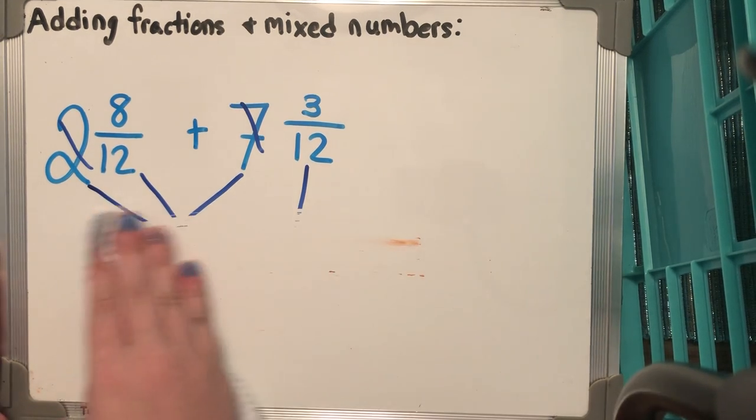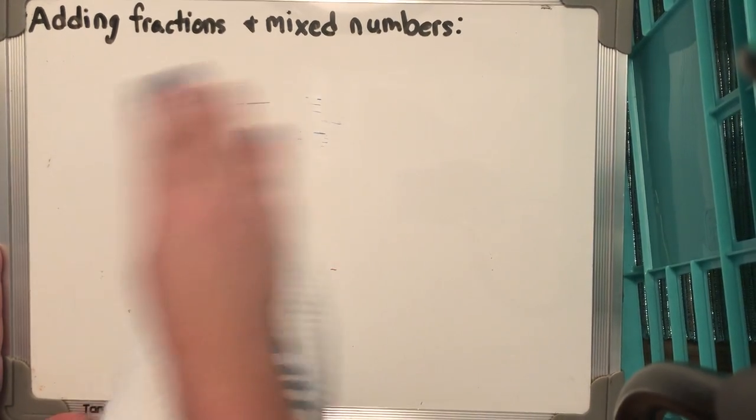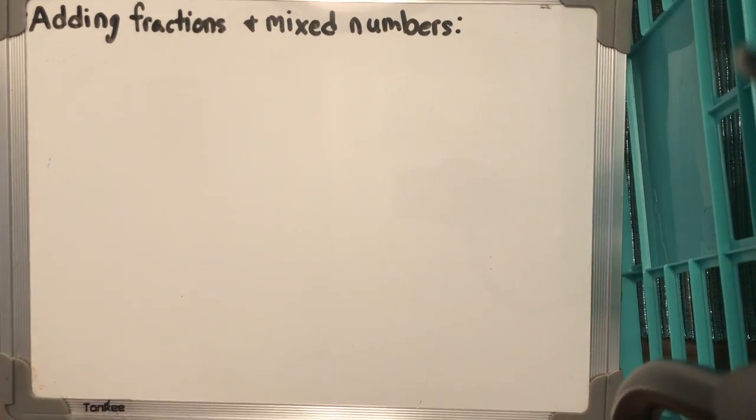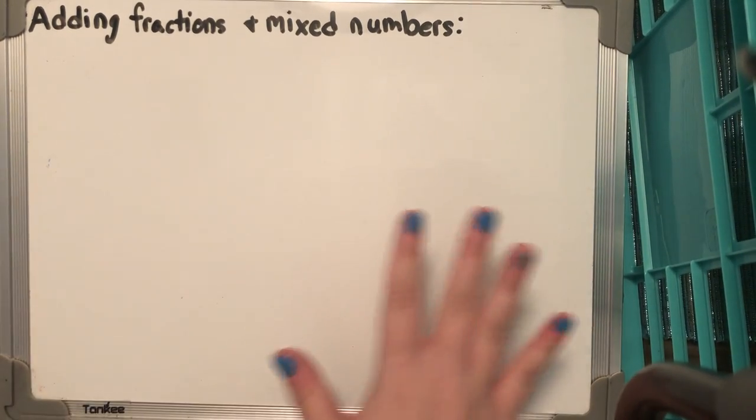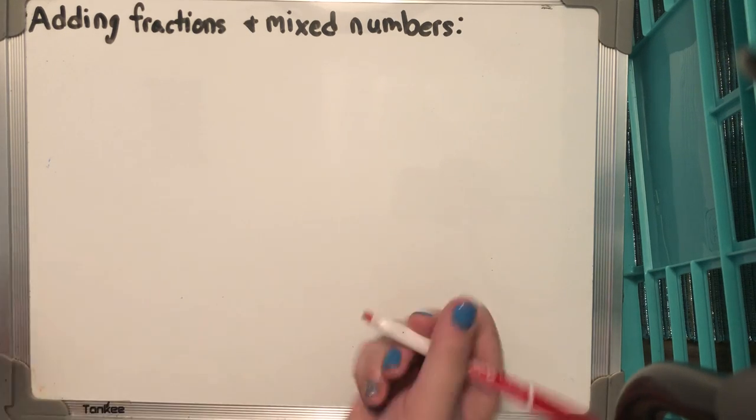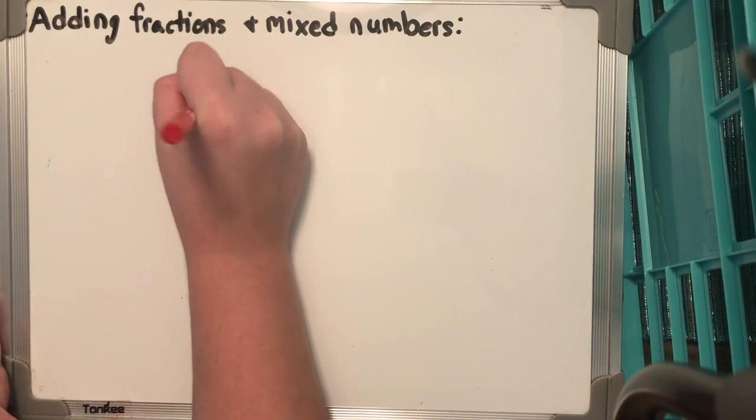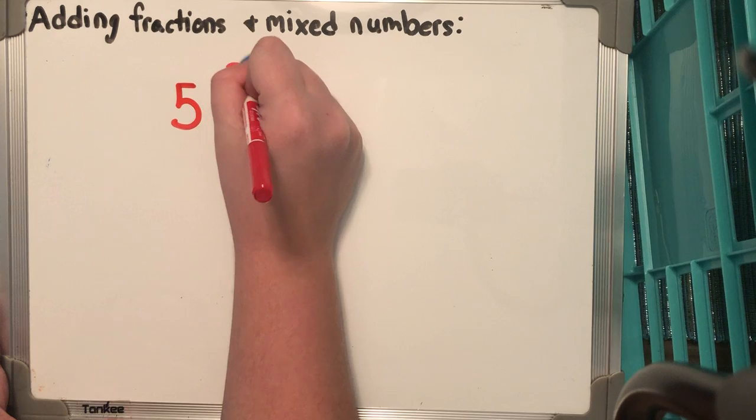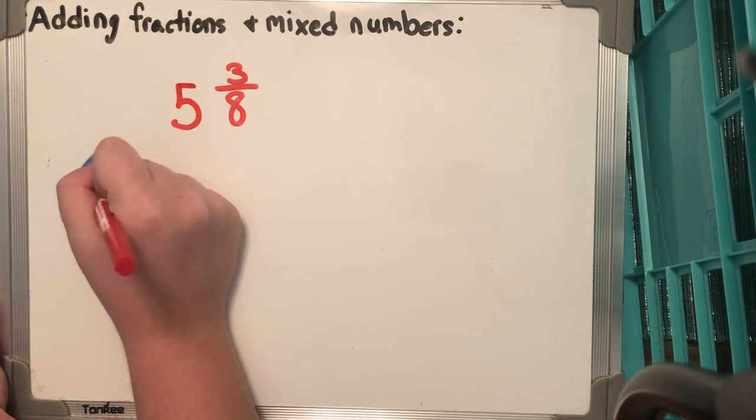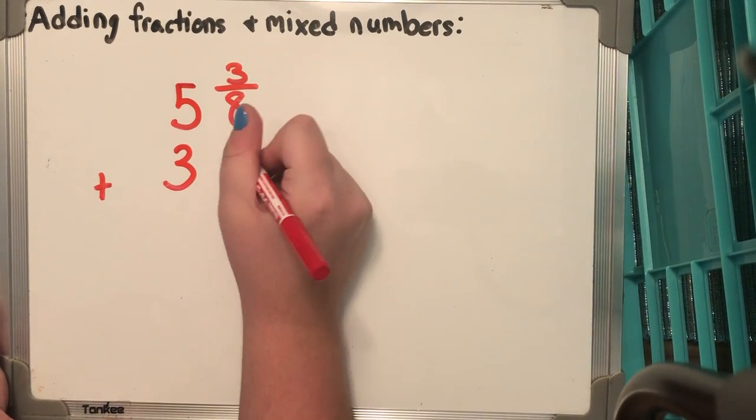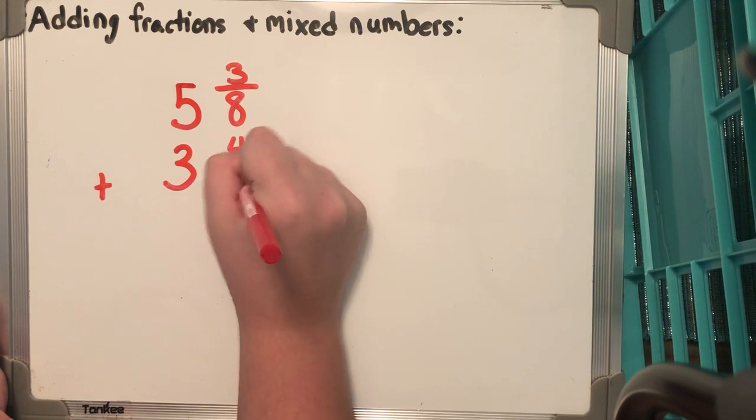And we're going to do one more quick problem. But I'm going to set it up a little bit differently. We do our problems a lot horizontally, but now I'm going to solve it vertically, which looks like this: 5 3/8 + 3 4/8.